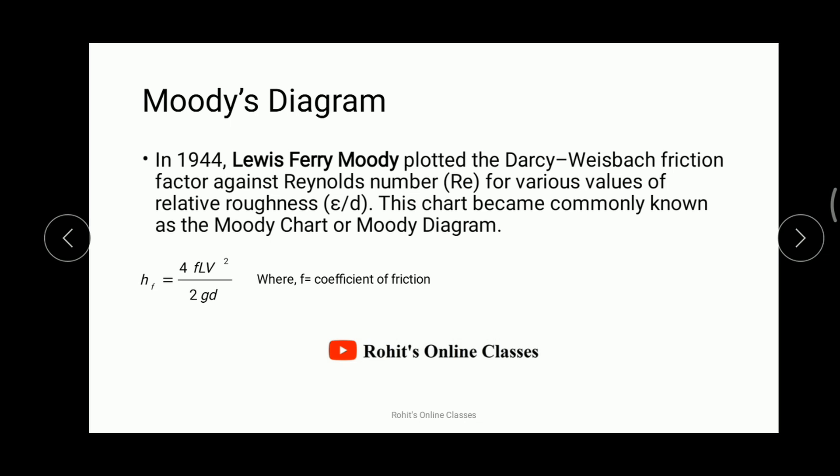The head loss due to friction as explained by Darcy and Weisbach is given by the formula: HF = 4FLV² / 2GD. Here, HF is the loss of head due to friction, F is the coefficient of friction, L is the length of the pipe, V is the velocity of flow, G is the acceleration due to gravity, and D is the diameter of the pipe.